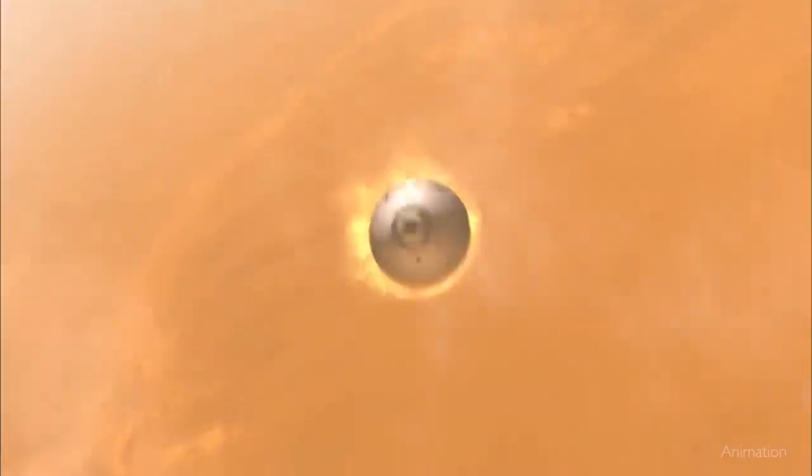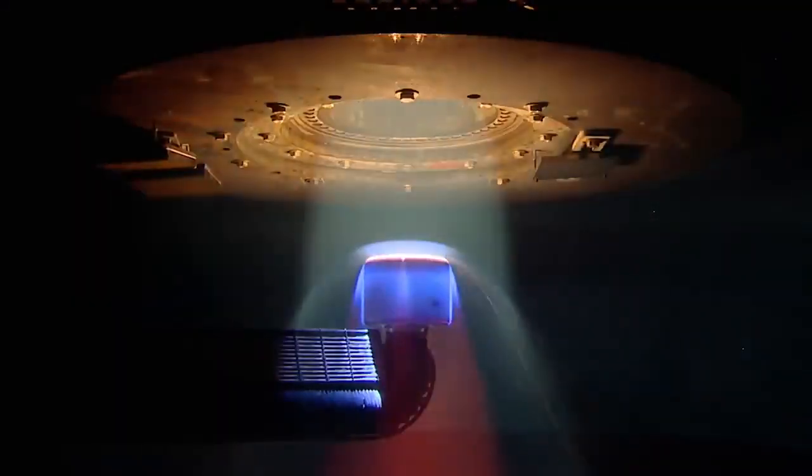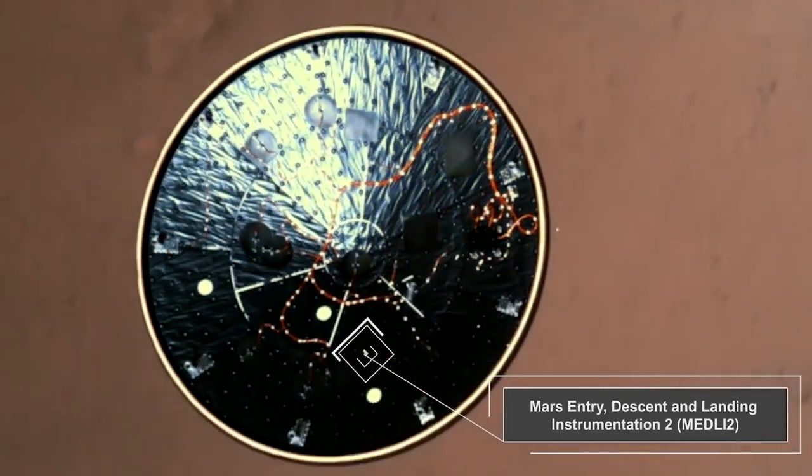Understanding what the heat shield experienced during entry can help us design more efficient heat shields for future missions. That's why we installed MEDLI-2, a set of temperature and pressure sensors spread across the inside of the heat shield that measured the extreme conditions experienced during Perseverance's descent to Mars.